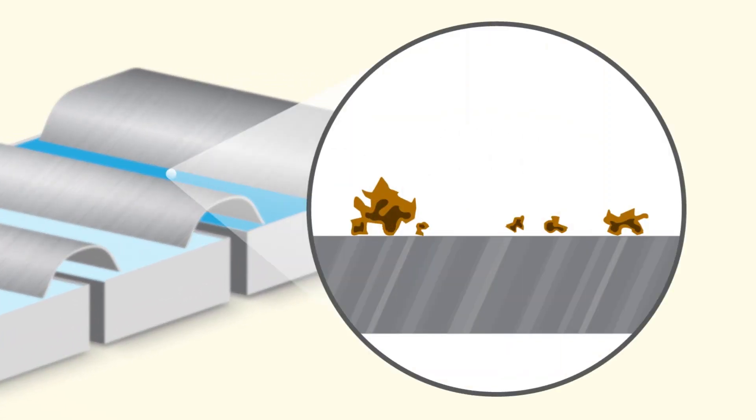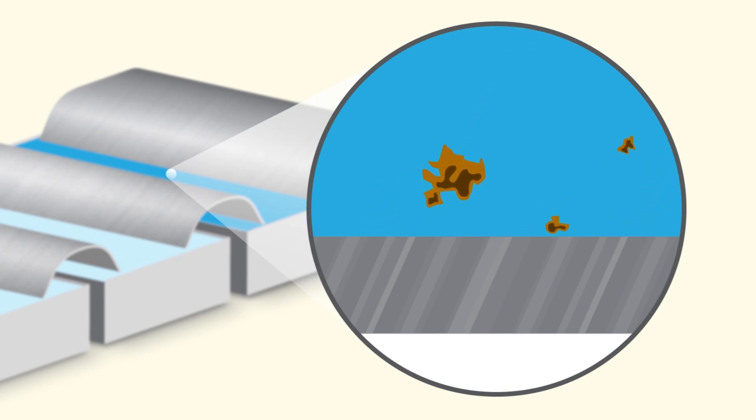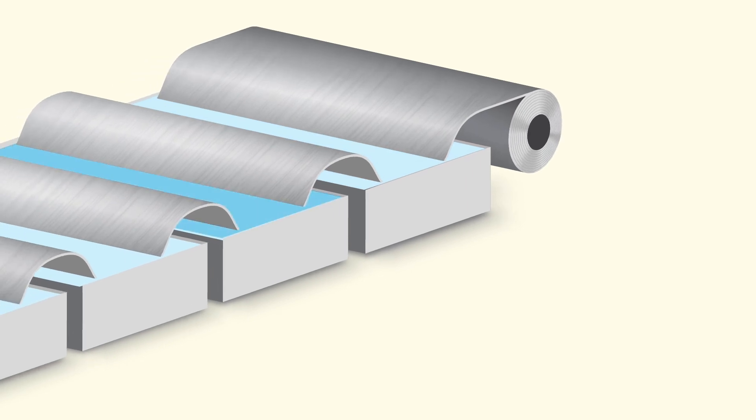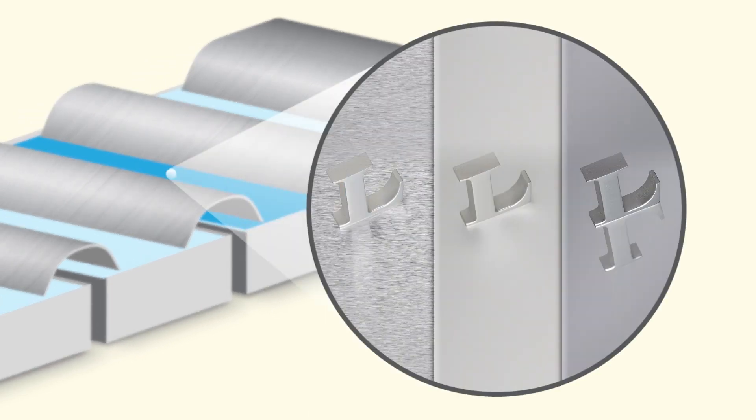The first step in the anodizing process is pretreatment, where the aluminum is cleaned to remove mill oils. Step two, depending on preference, the anodizer can treat the surface for a satin, matte or bright look.